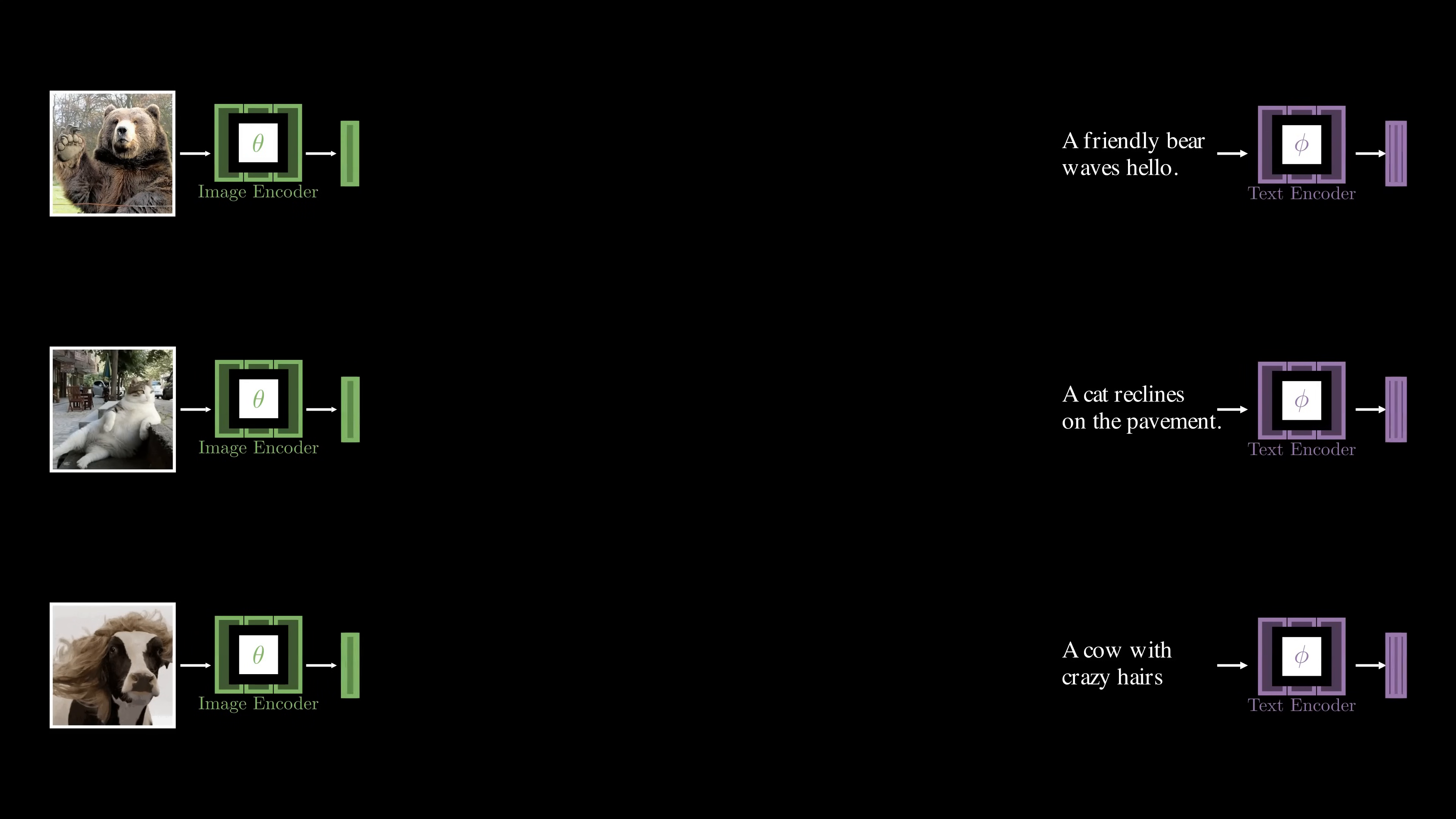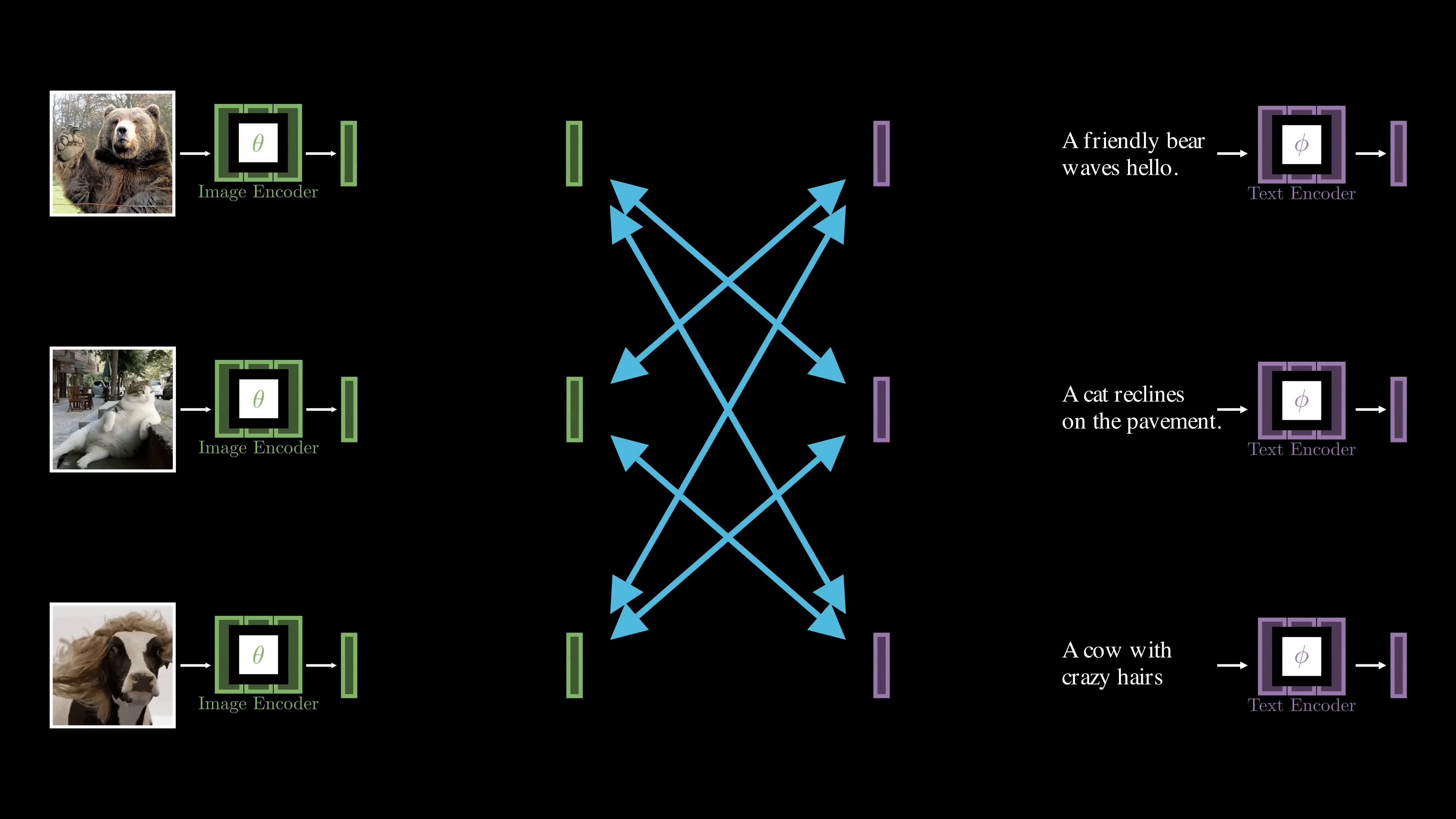Intuitively, we want the feature vectors for the image and the feature vector for its matching caption to be as similar as possible. This means the model learns that the image and its captions are related. At the same time, we want the image and text features for pairs that do not match, to be far apart.